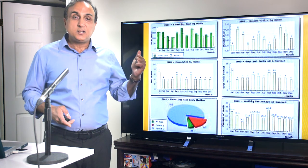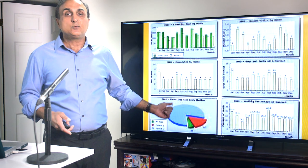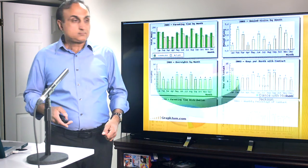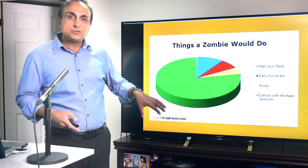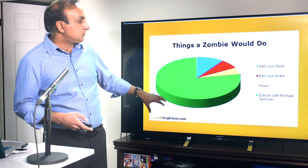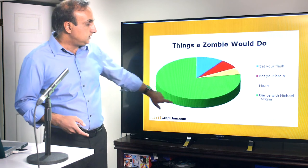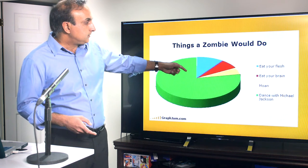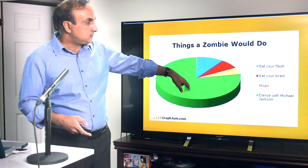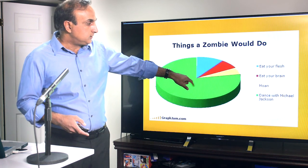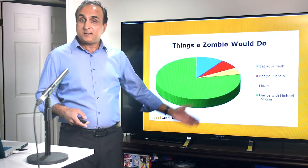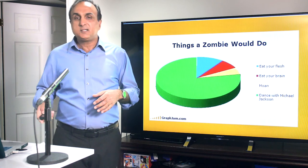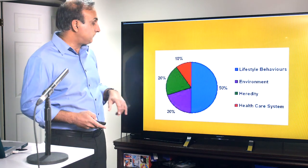One thing that's useful is to choose the type of graph that you use. Pie charts are much easier visually. When you see you're trying to explain something, I have this one little pie chart here. It's the things a zombie would do. Small portion eat your flesh, another one eat your brain, small part moan, and then a big three-quarter dance with Michael Jackson. You can see that. It's very visual. It's very easy to understand. And that's an effective way to use a pie chart. Pie charts are very handy.